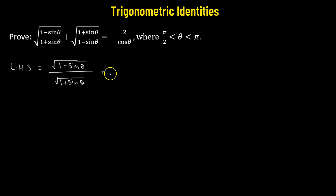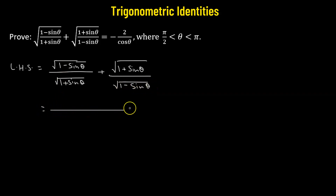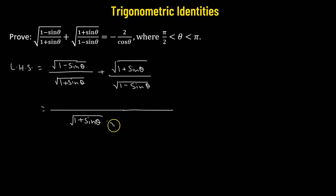Similarly, for the second term, we can rewrite it as square root of 1 plus sine theta divided by square root of 1 minus sine theta. Now we are going to combine the two terms, so our common denominator will be square root of 1 plus sine theta multiplied by square root of 1 minus sine theta.